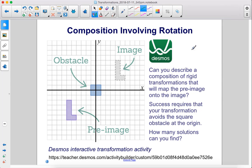Can you describe a composition of rigid transformations that will map the pre-image onto the image? Success requires that your transformation avoids the square obstacle at the origin. How many solutions can you find?